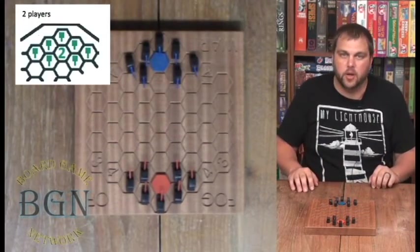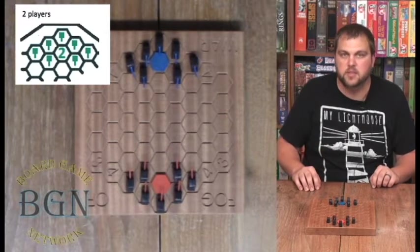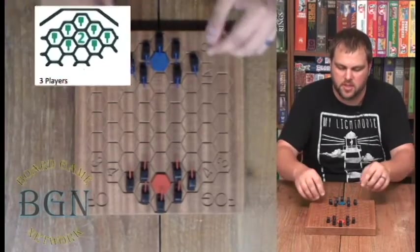This is the setup for a two player game. As you'll see, you just have a straight on conquest towards your opponent's base. And then for a three player game, we look for the threes and we rotate accordingly.